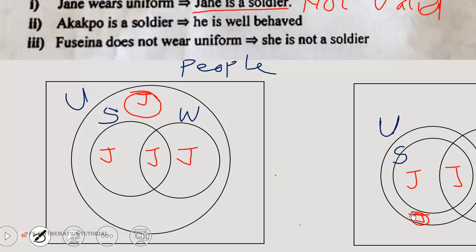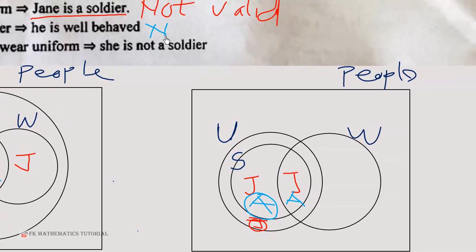Moving to implication (ii): Acouple is a soldier. Acouple can be placed anywhere within the soldiers' region S. The conclusion is that if Acouple is a soldier, then he is well behaved. However, there are some soldiers who are not well behaved, so being a soldier does not necessarily mean he is well behaved. That conclusion is not always true — implication (ii) is not valid.